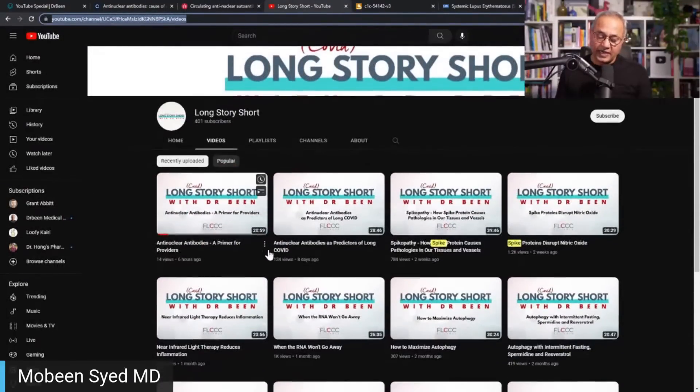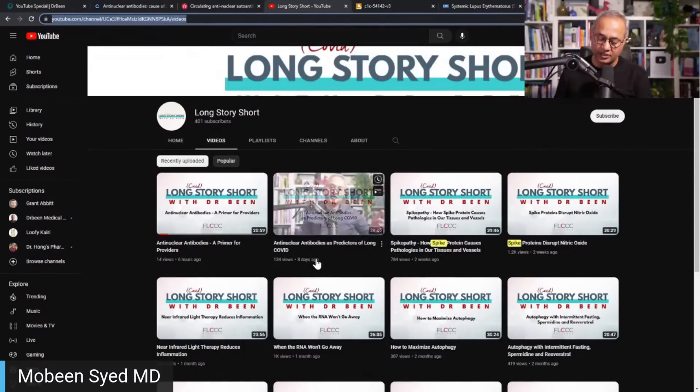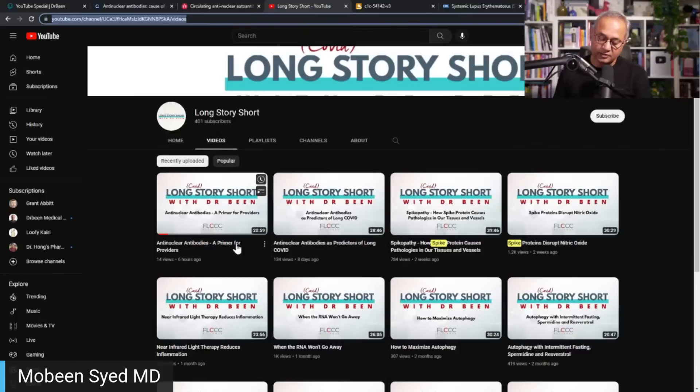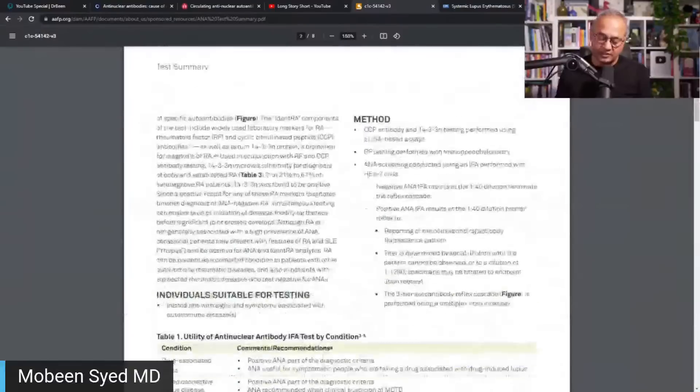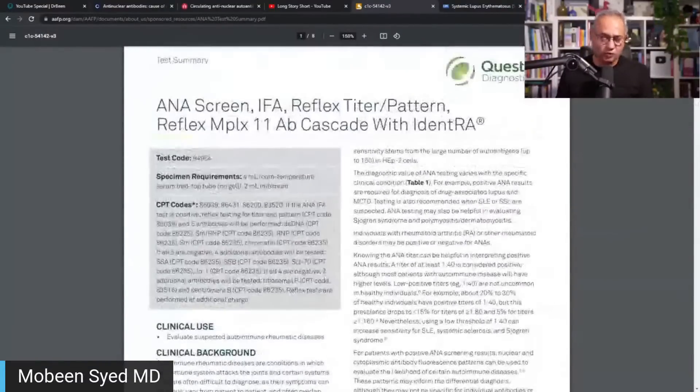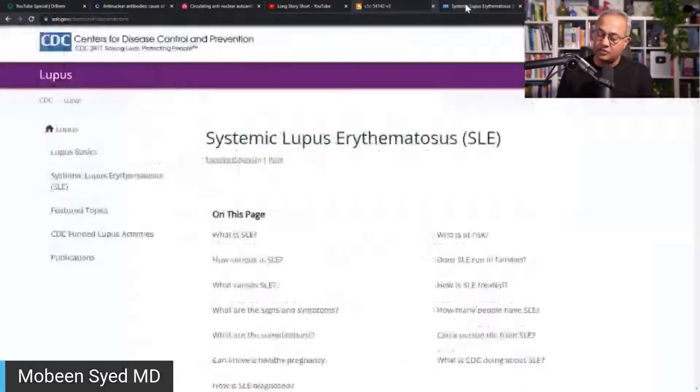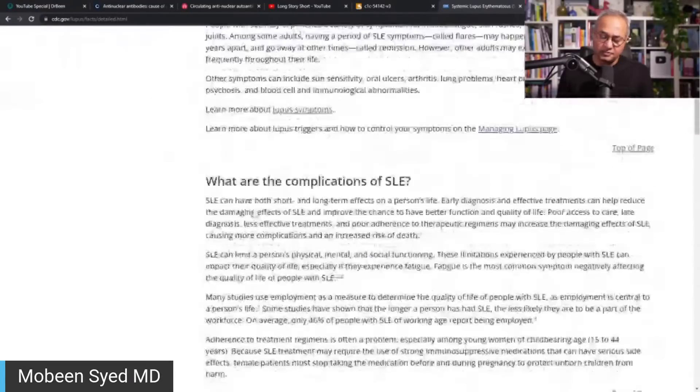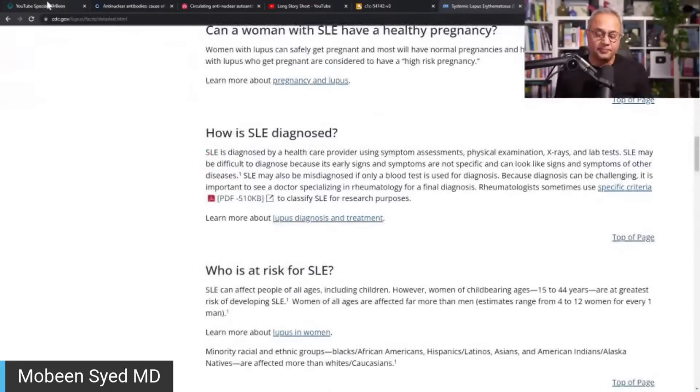Finally, I have discussed these topics in detail on Long Story Short with Dr. Bean from the FLCCC platform. So here, if you see anti-nuclear antibodies as predictors of long COVID, this is a 28-minute talk and then anti-nuclear antibodies, what are these, is another talk over here. So I'm not going to cover this in this detail. I'm going to try to do it very fast. I also have this link from the Quest Lab about the ANA screening and what does it mean. Then some little topic about SLE as well. So let's start a discussion.